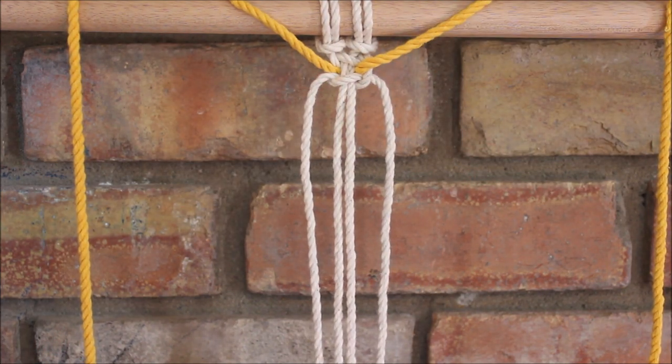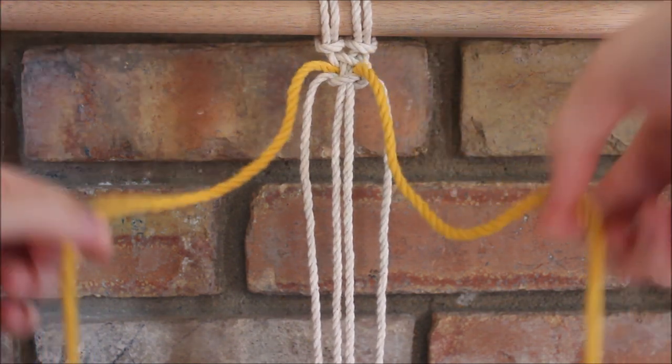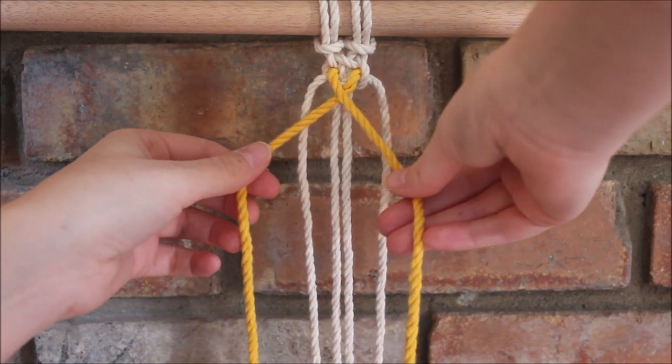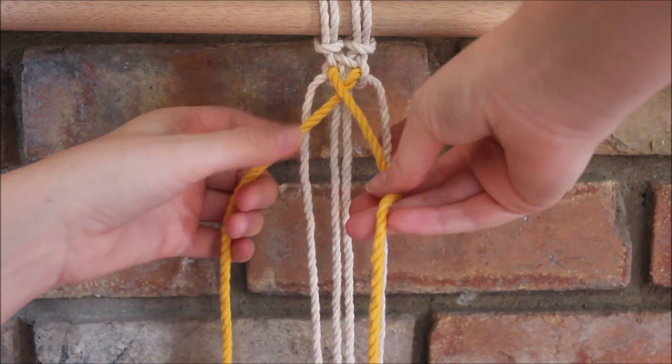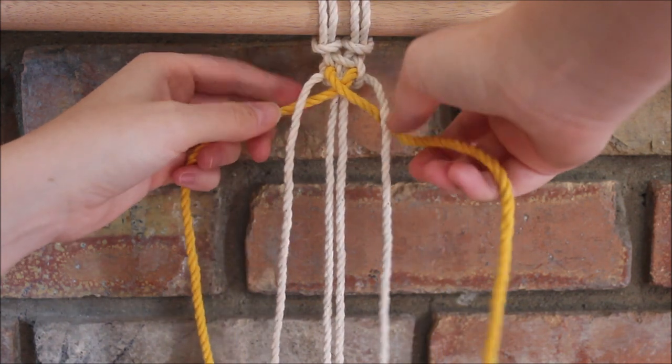Now we're going to work on getting our X pattern. To do this, I'm going to take those two ropes we had draped out of the way and I'm just going to cross the left one over the right to form this X.